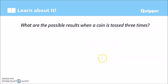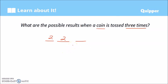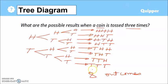To understand it better, let's go back to the coin example. A coin is tossed three times. On the first toss, how many choices do we have? We can only have head or tail — two choices. On the second toss, still head or tail. On the third toss, still head or tail. Then we multiply: two times two times two equals eight. There are eight possible outcomes — the same answer we got with the tree diagram.